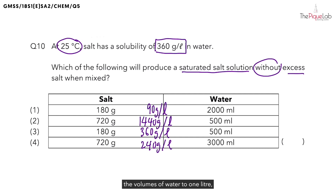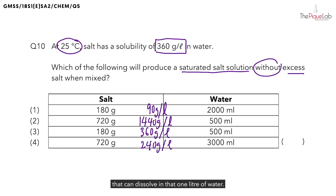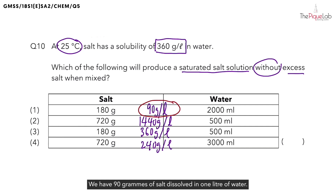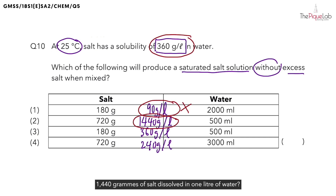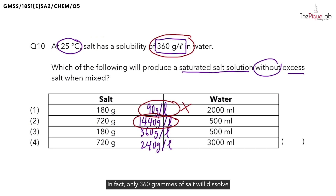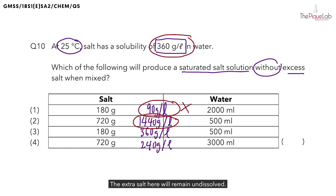Now that we have converted the volumes of water to one litre, it is easier for us to compare the mass of salt that can dissolve in that one litre of water. Option one has 90 grams of salt dissolved in one litre of water — that will not give us a saturated salt solution at 25 degrees Celsius, since we need 360 grams per litre. So this option is out. For option two, 1,440 grams of salt per litre shows there is excess salt — only 360 grams will dissolve, so the extra salt will remain undissolved. The question wants a saturated solution without any excess salt, so this option is out.